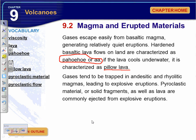Gases tend to be trapped in andesitic and rhyolitic magmas — the ones with more silica — and they lead to explosive eruptions. Pyroclastic material, which is material ejected from a volcanic eruption as solid fragments as well as lava, is commonly ejected from explosive eruptions. Mount St. Helens is a classic example, where the trapped gas caused the thick, sticky rock to blow the side of the mountain apart.